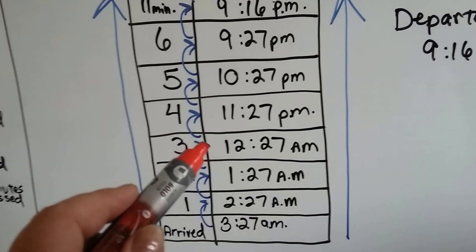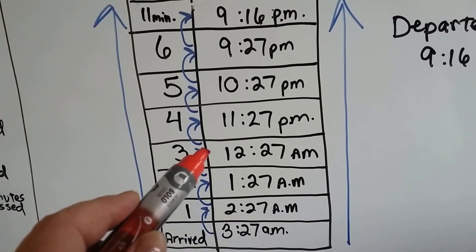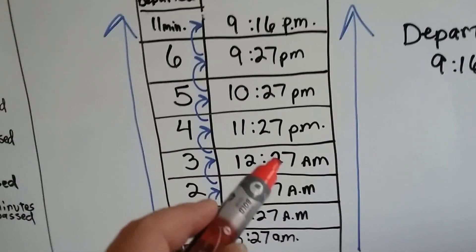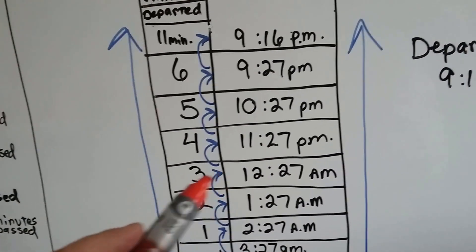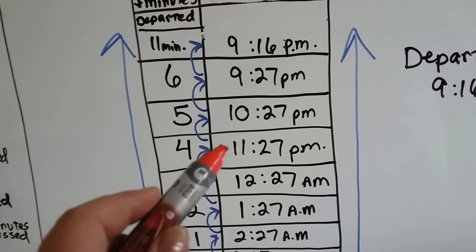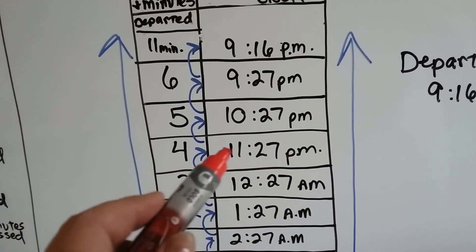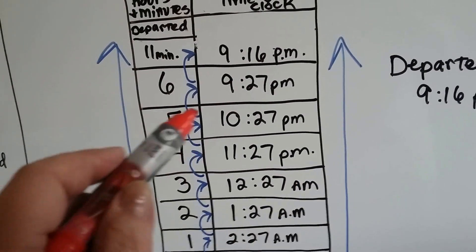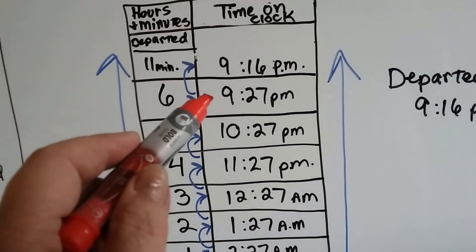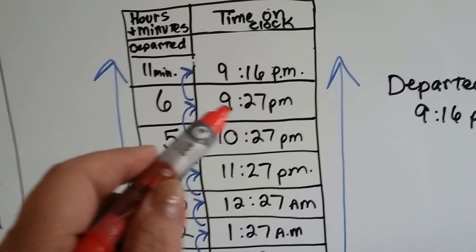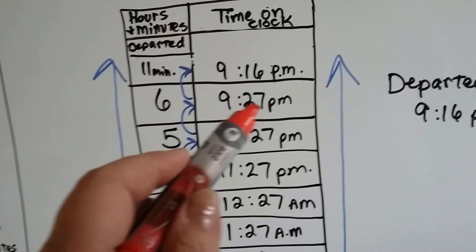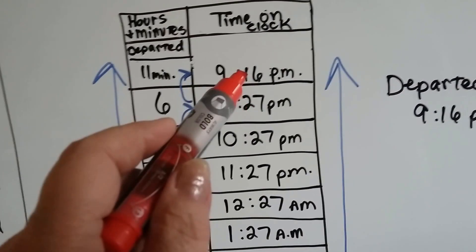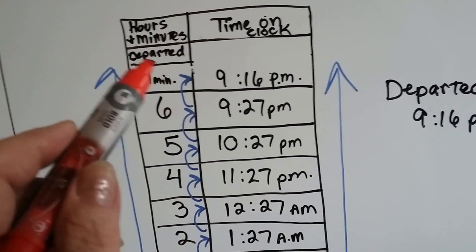And now it's going to jump from a.m. to p.m., from the wee hours early in the morning to late at night. And that's four hours. Now we're at 11:27 p.m. It passed the 12 o'clock mark, so we went from a.m. to p.m. Five hours would bring us back to 10:27. Six hours would bring us back to 9:27 p.m. And now all we need to do is take away 11 minutes from this. If we subtract 11 from 27, we get 16. See, so we know that it departed at 9:16 p.m. And I just worked backwards going up with the table. Wasn't that easy?